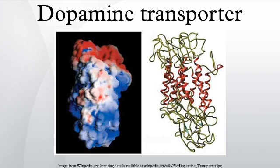The gene that encodes the DAT protein is located on human chromosome 5, consists of 15 coding exons, and is roughly 64 kbp long. Evidence for the associations between DAT and dopamine-related disorders has come from a type of genetic polymorphism known as a VNTR in the DAT gene, which influences the amount of protein expressed.